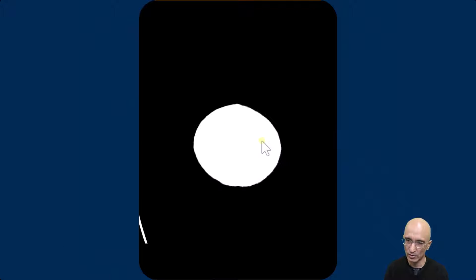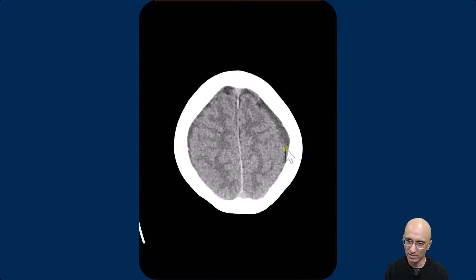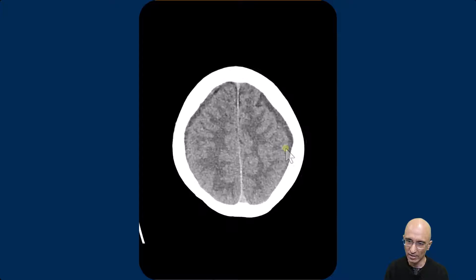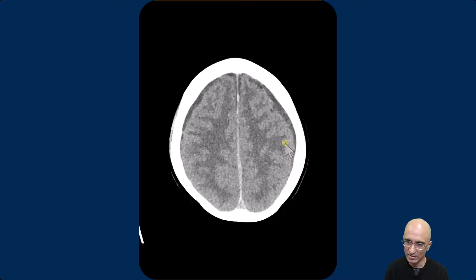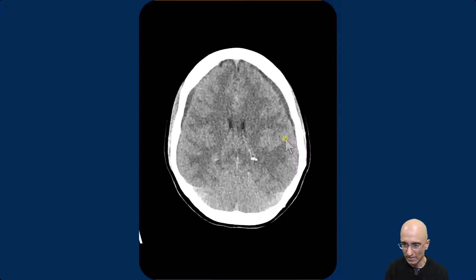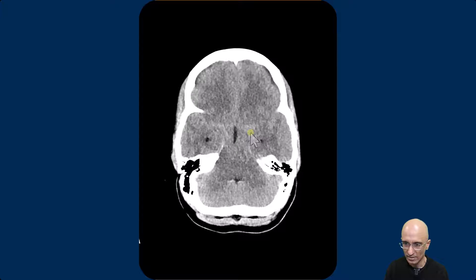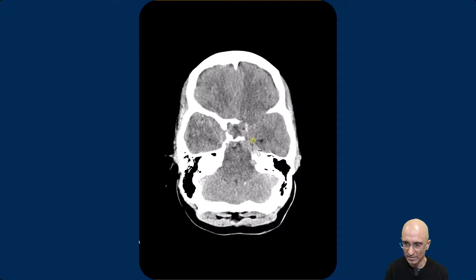I'm going to scroll through the CT head from superior to inferior direction. As you can see, there are hypodense bilateral convexity subdural collections. There is loss of sulci in bilateral cerebral hemispheres. As I scroll down further, there is effacement of the basal cisterns.